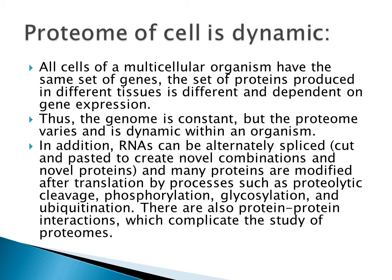As another example: when we consume carbohydrates, the production of insulin from the pancreatic cell is higher compared to the condition when carbohydrates or sugar are not present, in which case insulin is produced in lesser amounts. Therefore, again we can say the proteome varies while the genome is constant.